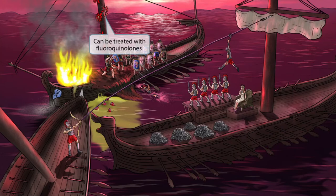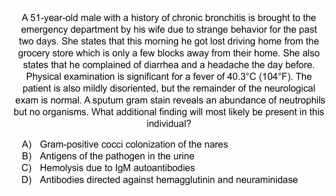Now that we've covered the image, let's review with a question. A 51-year-old male with a history of chronic bronchitis is brought to the emergency department by his wife due to strange behavior for the past two days. She states that this morning he got lost driving home from the grocery store, which is only a few blocks away from their home. She also states that he complained of diarrhea and a headache the day before. Physical examination is significant for a fever of 40.3 degrees Celsius. The patient is also mildly disoriented, but the remainder of the neurological exam is normal. A sputum gram stain reveals an abundance of neutrophils but no organisms. What additional finding will most likely be present? A, gram-positive cocci colonization of the nares. B, antigens of the pathogen in the urine. C, hemolysis due to IgM autoantibodies. Or D, antibodies directed against hemagglutinin and neuraminidase.